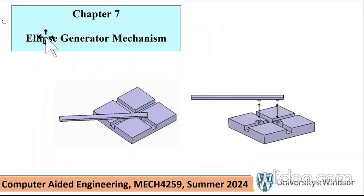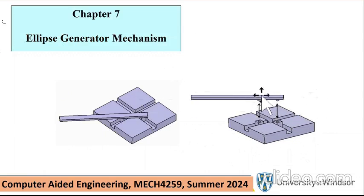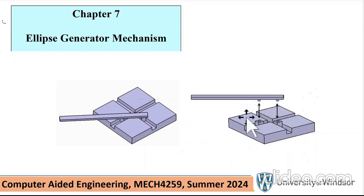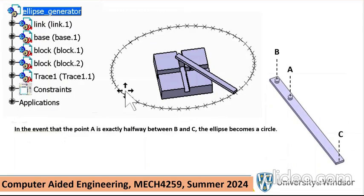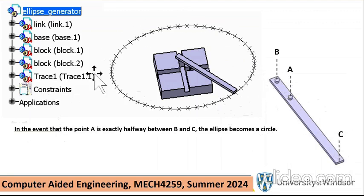The first problem is called the ellipse generating mechanism. We have a base with tracks, and two blocks that travel up and down these tracks. There's a rod with two pins going to the top of these blocks. As the blocks travel, one follows one track and the other follows the other, and the rod starts turning, generating an ellipse. If point A is exactly halfway between B and C, this will be a circle; otherwise it's an ellipse.